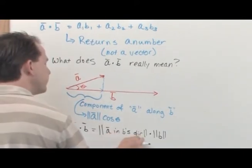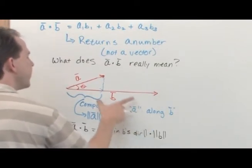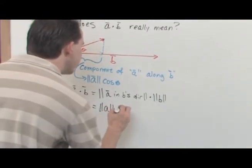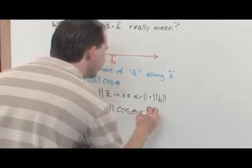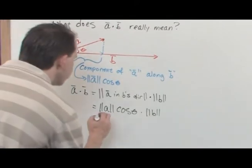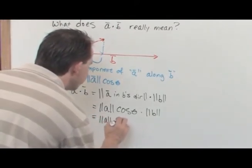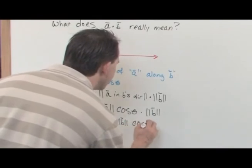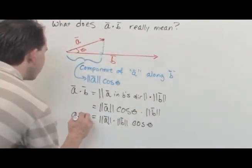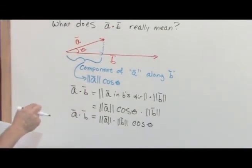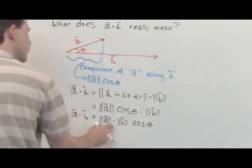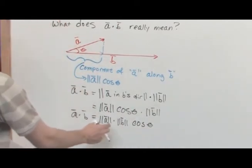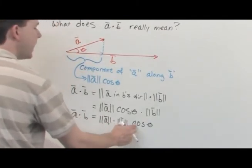So we can rewrite: a dot b equals the length of a times the length of b times cosine of theta. You'll commonly see that in physics books and calculus books. This representation gives you a number because the norm of a is a number, the norm of b is a number, and the cosine of the angle is a number — multiply them all together and you get a number.